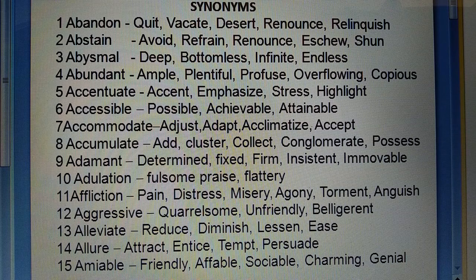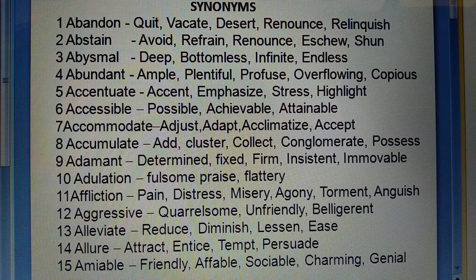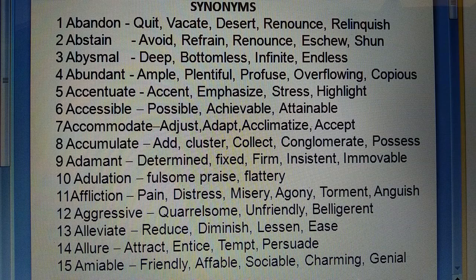Fifth: Accentuate (kisi baat par zor dena) — accent, emphasize, stress, highlight. Sixth: Accessible (jisko prapt kiya ja sake) — possible, achievable, attainable. Seventh: Accommodate (kahin par apne aap ko set karna) — adjust, adapt, acclimatize, accept. Eighth: Accumulate (ekattha karna) — add, cluster, collect, conglomerate, possess.